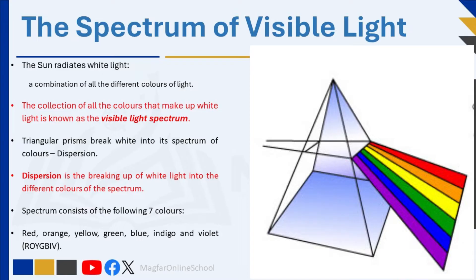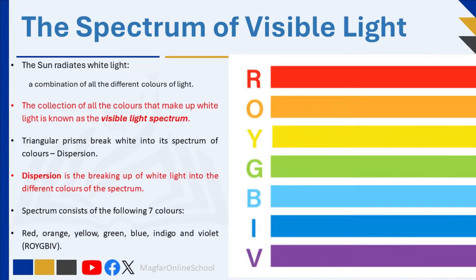Dispersion is the breaking up of white light into the different colors of the spectrum. This spectrum, or color range, consists of the following seven colors: red, orange, yellow, green, blue, indigo, and violet. To easily remember the correct sequence of these colors, they can be abbreviated as ROYGBIV.